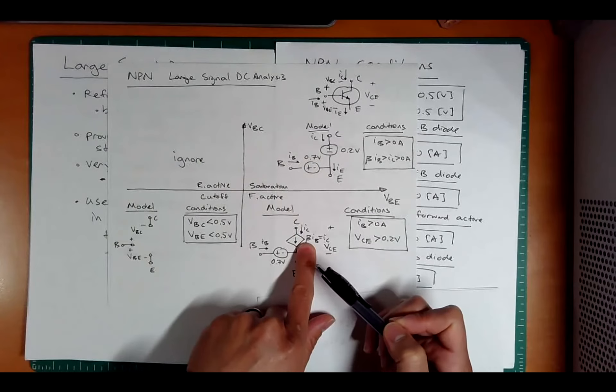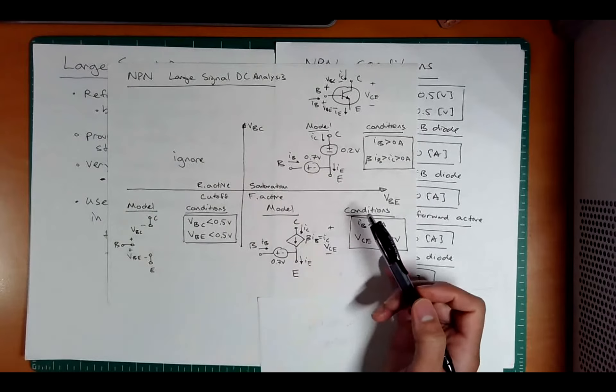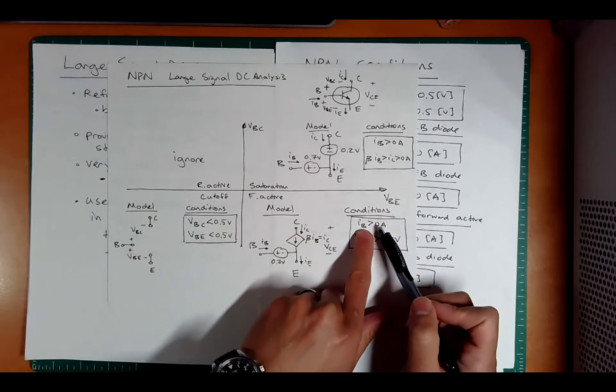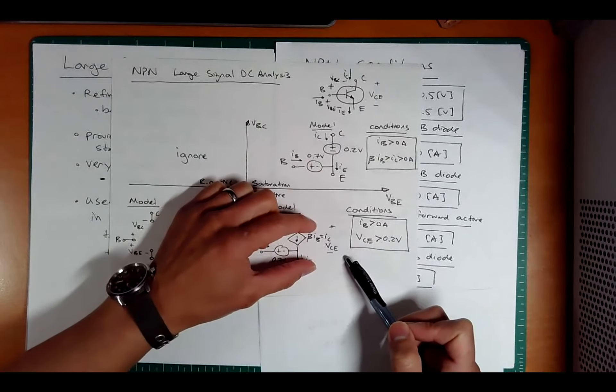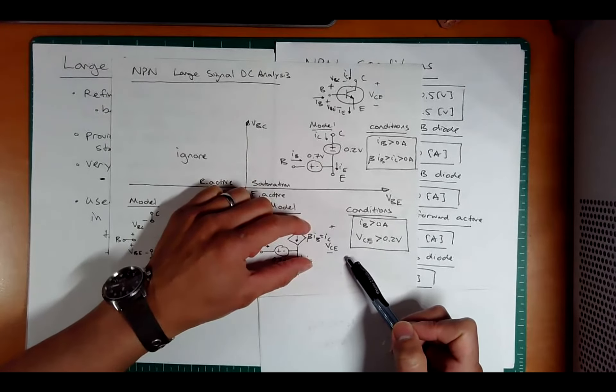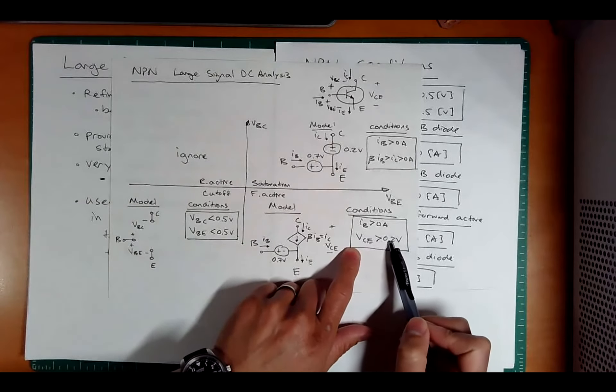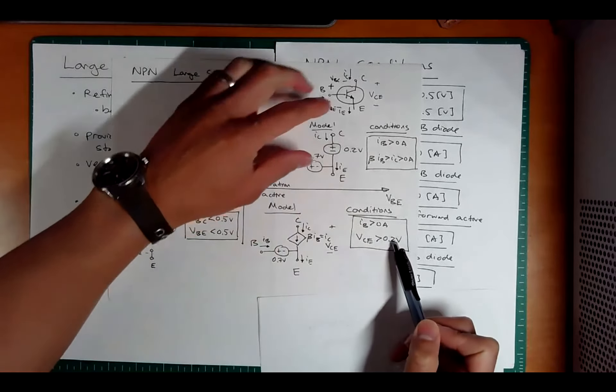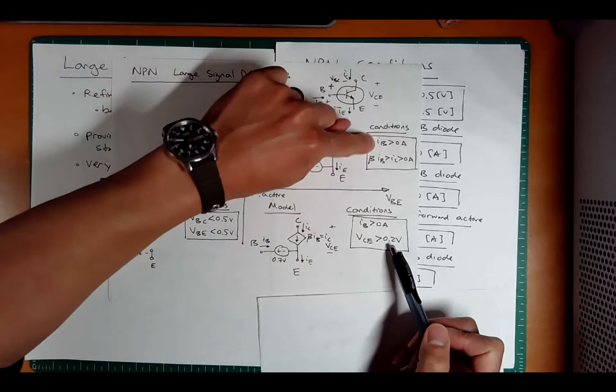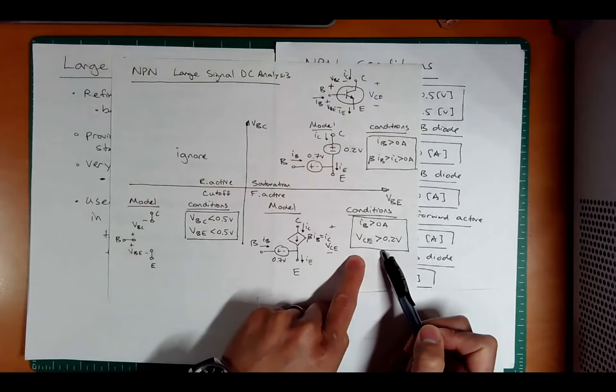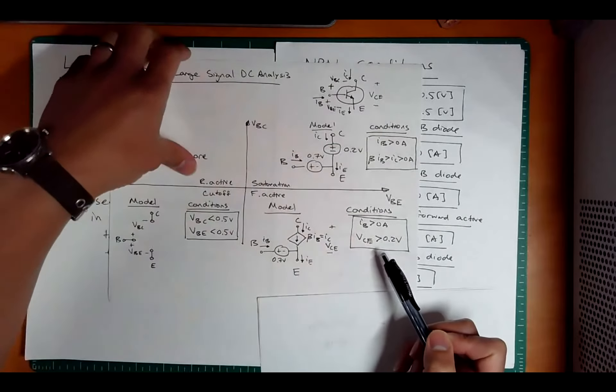So what is this beta? Remember, it's a large number, like 25, 100, 1000. And if we're using a Darlington pair, it's even larger. What are the conditions? IB is greater than zero. And we have to check that if this VCE, the voltage across this thing, is greater than 0.2. So this condition here distinguishes it between saturation. If you're here, you're going to check that it's also in an on state, but also that it's different from saturation.